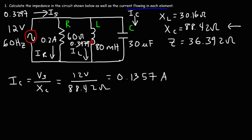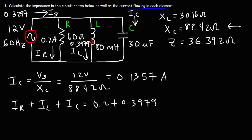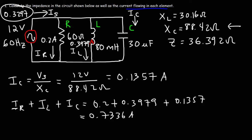Notice that IS is not the mathematical sum of IR, IL, and IC. If we were to add up those values — IR = 0.2, IL = 0.3979, and IC = 0.1357 — adding them gives 0.7336, which doesn't equal IS. Even though IS is not the mathematical sum of these currents, it is the vector sum.